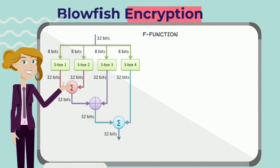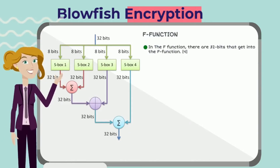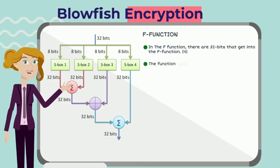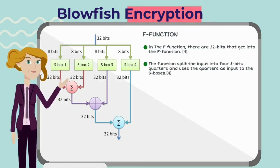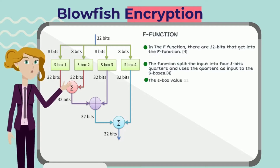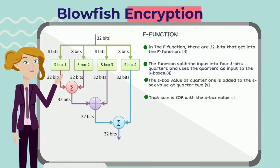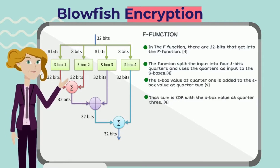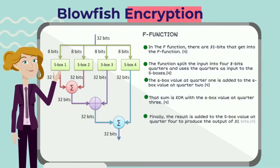In the expansion step, 32 bits enter the expansion function, which splits the input into four quarters used as input to the S-boxes. The S-box value at quarter 1 is added to the S-box value at quarter 2. That sum is XORed with the S-box value at quarter 3. Finally, the result is added to the S-box value at quarter 4 to produce the 32-bit output.